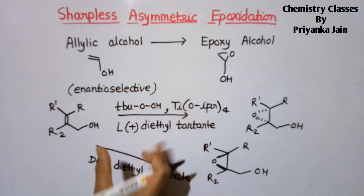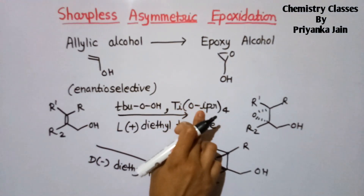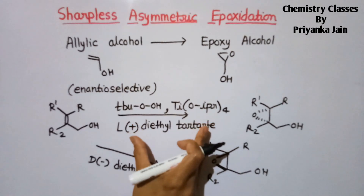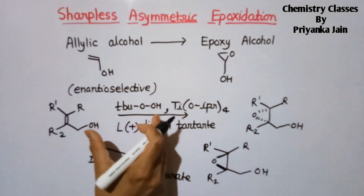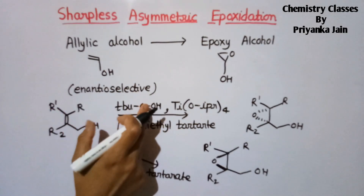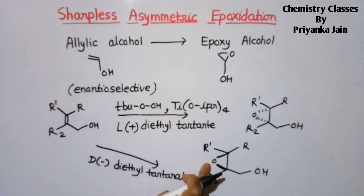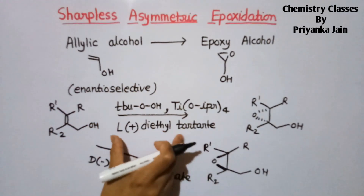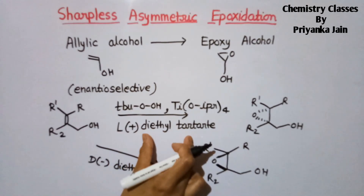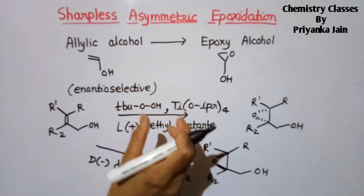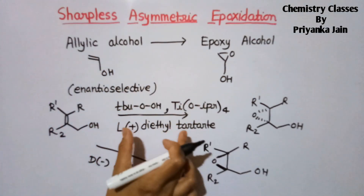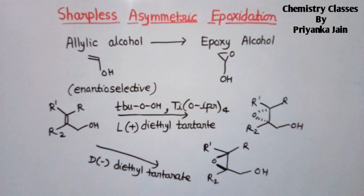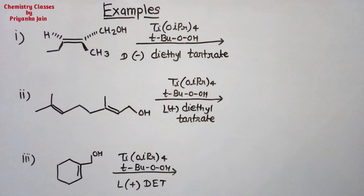What is the role of each reagent? Titanium tetra-isopropoxide acts as the catalyst. Tertiary butyl hydroperoxide acts as the oxidant — it provides the oxygen for formation of the epoxy ring. Diethyl tartrate is the reagent that provides enantioselectivity; due to this we are getting chirality in this reaction.